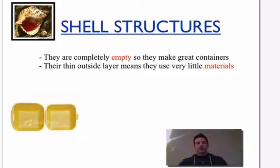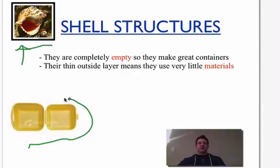Shell structures are completely empty, so we're just looking at the outer shell. They're completely empty, so they make good containers. If we take a look here, there's a shell structure that makes a good container to pack up our food. There's many other shell structures we can use as well. Think of the Tupperware. That's a shell structure, and we can use that structure to keep food as well.